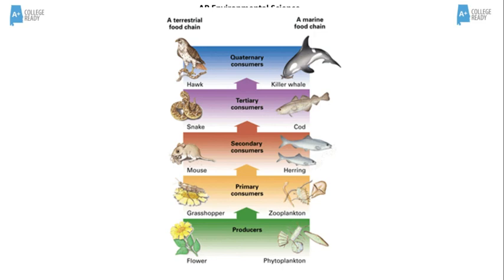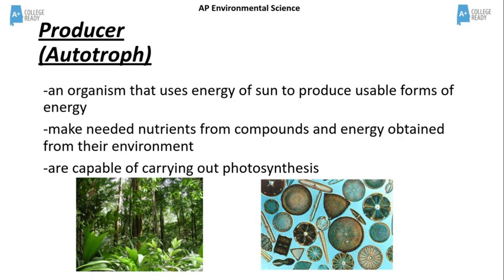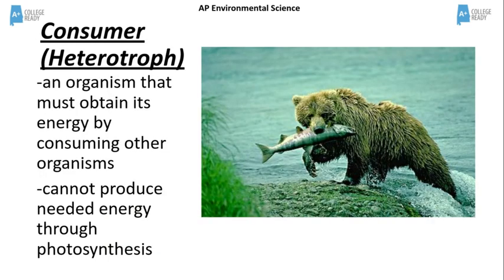Now let's look at each level. Producers are organisms that carry out photosynthesis and thereby make their own energy. They're also called autotrophs. Examples of producers are plants and phytoplankton. Consumers are organisms that must eat other organisms in order to get energy — they cannot make their own energy through photosynthesis.